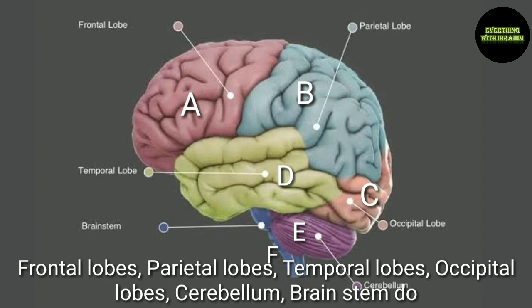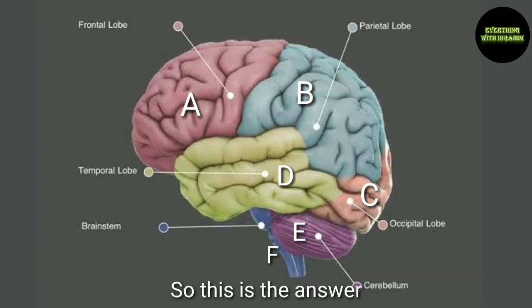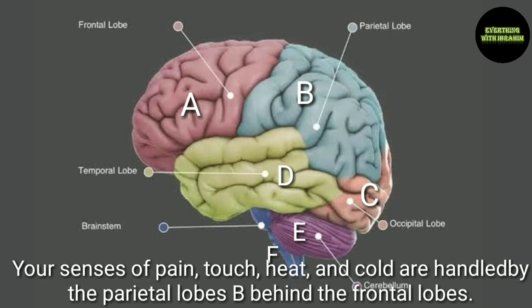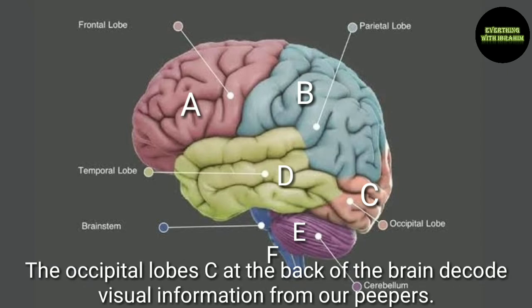What do these parts do? The frontal lobe processes your thoughts and space, as well as learning, emotion, and some types of memory. Your sense of pain, touch, heat, and cold are handled by the parietal lobe, behind the frontal lobe. The occipital lobe at the back of the brain decodes visual information from our eyes.